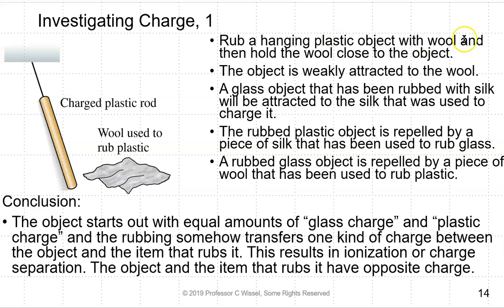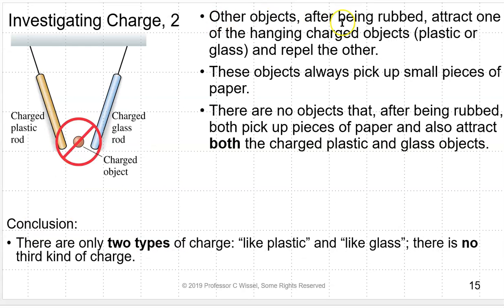If you rub a hanging plastic object with wool and then hold the wool close to the object, the object will be weakly attracted to the wool. A glass object that has been rubbed with silk will be attracted to the silk that was used to charge it. A rubbed plastic object is repelled by a piece of silk that was used to rub glass, and a rubbed glass object is repelled by a piece of wool that was used to rub plastic. The conclusion: the object starts out with equal amounts of glass charge and plastic charge, and rubbing somehow transfers one kind of charge between the object and the item that rubs it. This results in ionization or charge separation. The object and the item that rubs it have opposite charge and equal magnitude of charge.